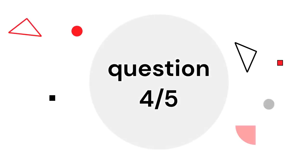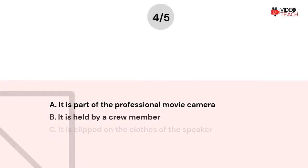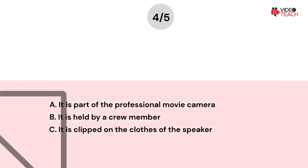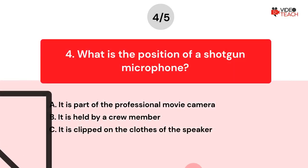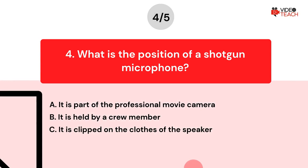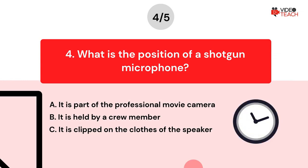Question number four. What is the position of a shotgun microphone? Option A, it is part of the professional movie camera. Option B, it is held by a crew member. Option C, it is clipped on the clothes of the speaker. Now you have about 15 seconds to think about your answer.